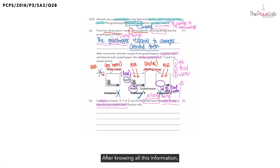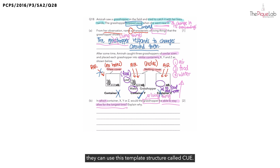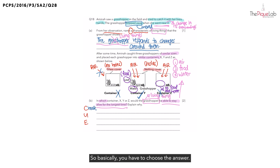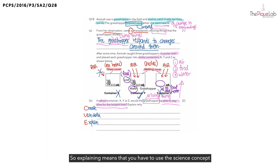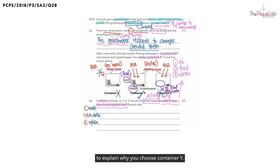After knowing all this information, how should we then phrase our answer? I have always taught my students that whenever they need to choose the answer between three different setups, they can use this template structure called C-U-E. C stands for choosing — you have to choose the answer. U stands for use data — you have to use information given in the question to back up your answer, providing evidence on why you chose container Y. E stands for explain — you have to use the science concept or science knowledge you have learned to explain why you chose container Y.